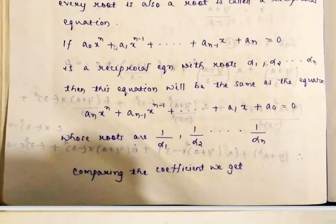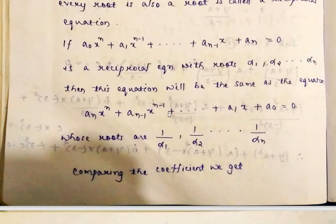So, if a₀xⁿ + a₁xⁿ⁻¹ + ... + aₙ₋₁x + aₙ = 0 is a reciprocal equation with roots α₁, α₂, ..., αₙ, then this equation will be the same as aₙxⁿ + aₙ₋₁xⁿ⁻¹ + ... + a₁x + a₀ = 0, whose roots are 1/α₁, 1/α₂, ..., 1/αₙ.